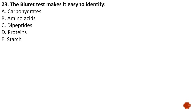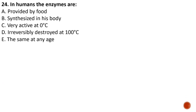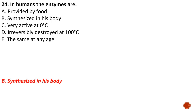Question number twenty-three: the Biuret test helps to identify peptide bonds, so the correct answer is C — dipeptide. The Biuret test determines the presence of peptide bonds within a molecule, which also helps to determine the amount of protein present in a substrate. Question number twenty-four: enzymes in human bodies are synthesized by our bodies and are not taken in as supplements, so the answer is B.